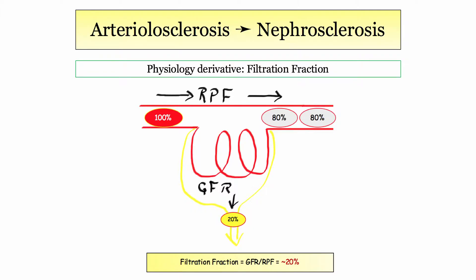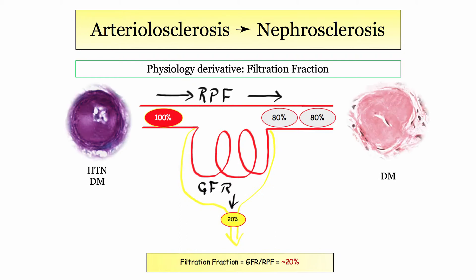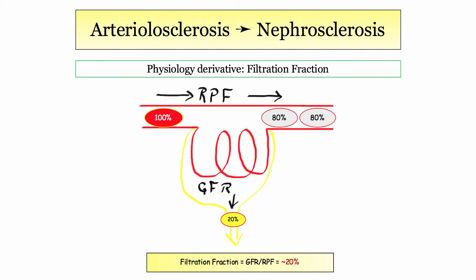There are a couple of important physiology derivatives buried in this topic, focusing on the efferent arteriole. Before proceeding, I want to clarify the involvement of the afferent versus efferent arteriole in arteriolosclerosis. Generally speaking, hypertensive arteriolosclerosis is described as involving the afferent arteriole. The diabetic, on the other hand, is described as involving either afferent or efferent arterioles. I make this distinction as we are about to discuss filtration fraction, and some resources identify preferential efferent arteriole involvement in diabetic hyalinosis — though this is not an invariable part of the condition.